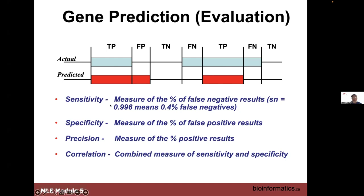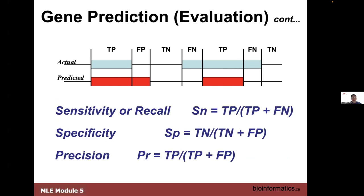We've talked about sensitivity and specificity before in terms of the confusion matrix, and these same concepts apply to gene prediction evaluation. There are also tools for calculating precision and correlation. The formulas for sensitivity and specificity are the same as shown previously with the confusion matrix.